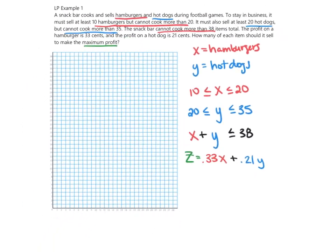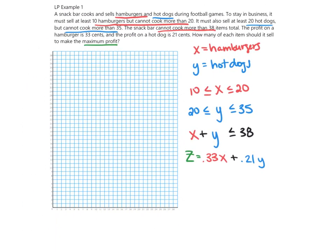On our graph, we're going to label the axes with our variables. The x-axis is the hamburger axis and the y-axis is the hot dog axis. The next thing we're going to do is graph the actual constraints we've been given.